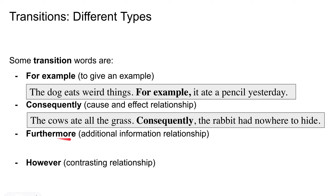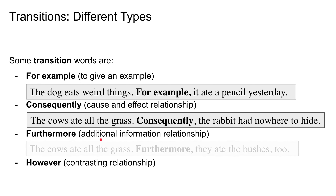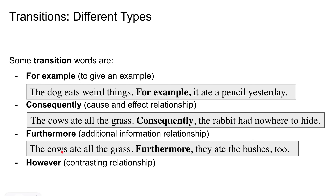Then we have 'furthermore.' This is used to add information. For example: 'The cows ate all the grass. Furthermore, they ate the bushes too.' We can see that the second sentence adds information to the first sentence.